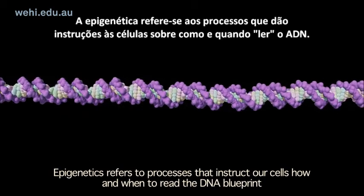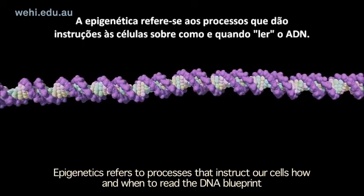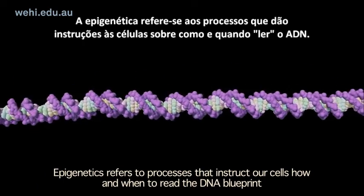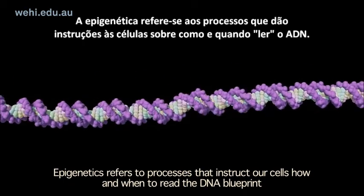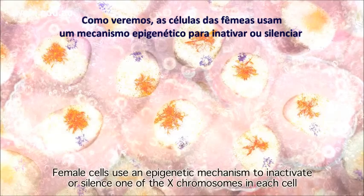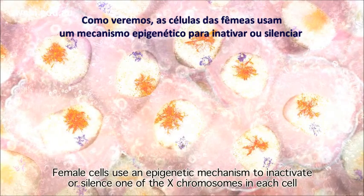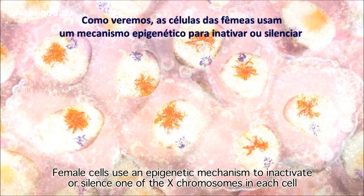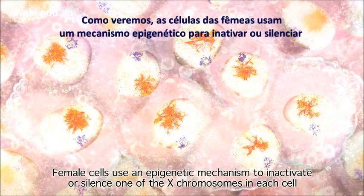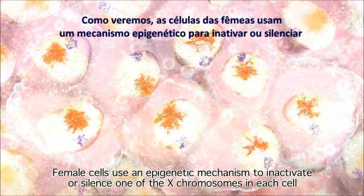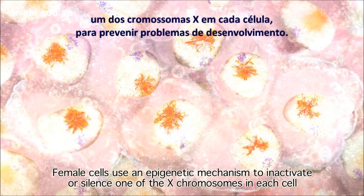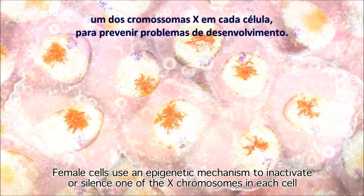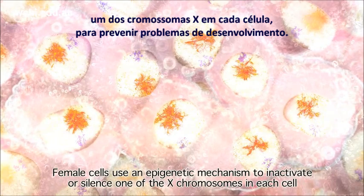Epigenetics refers to processes that instruct our cells how and when to read the DNA blueprint. As we will see, female cells use an epigenetic mechanism to inactivate or silence one of the X chromosomes in each cell to prevent abnormal development.